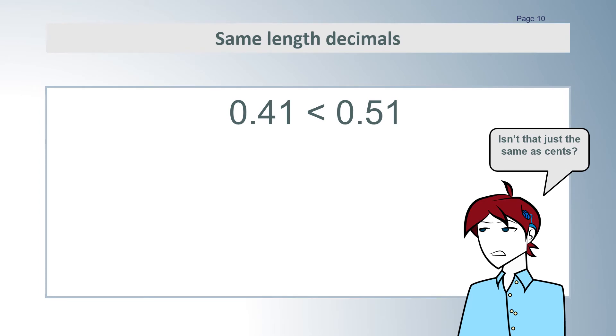When there are two decimal places, it looks like money. If we think of it as 41 cents and 51 cents, we can easily see that 51 cents is greater.